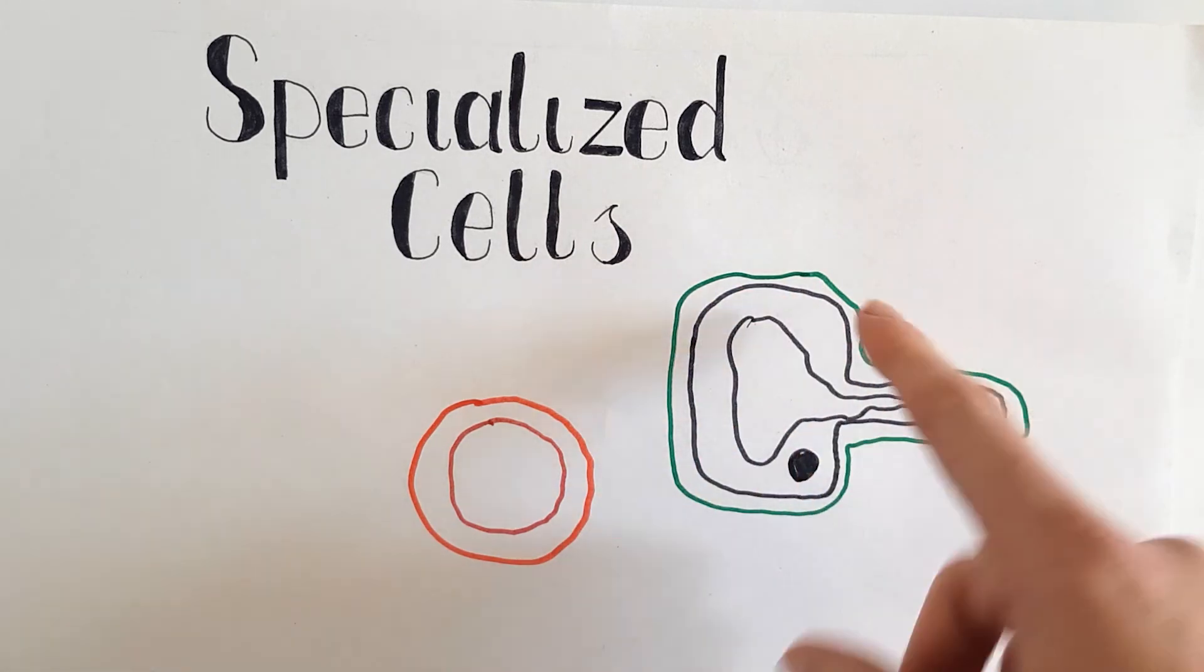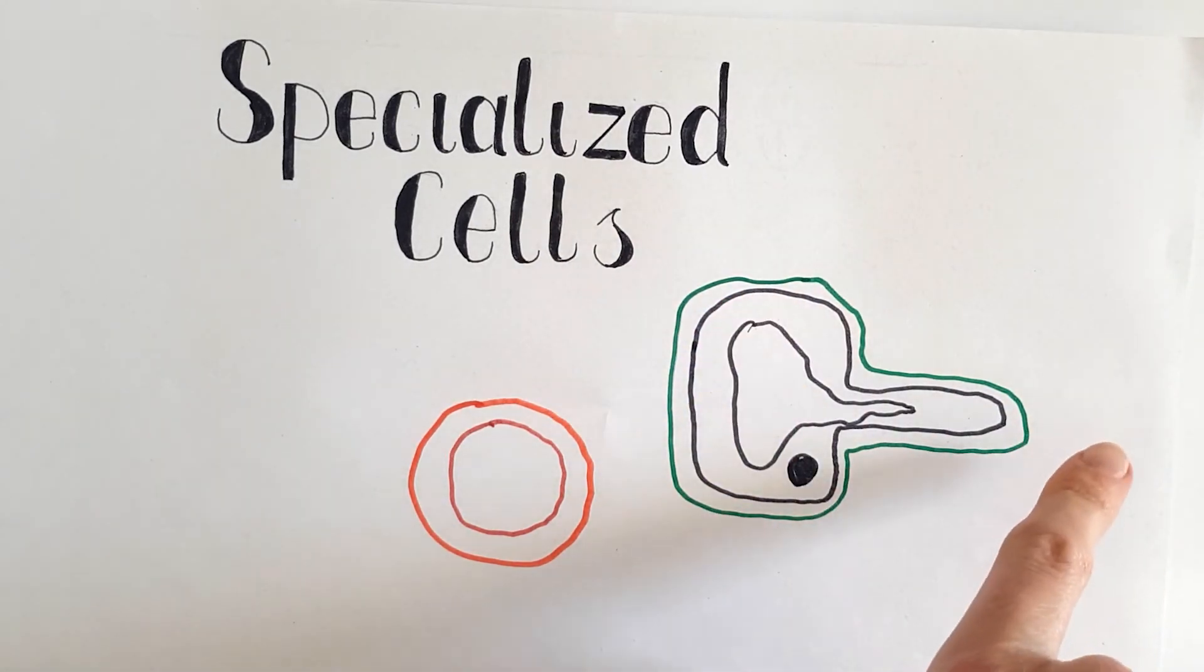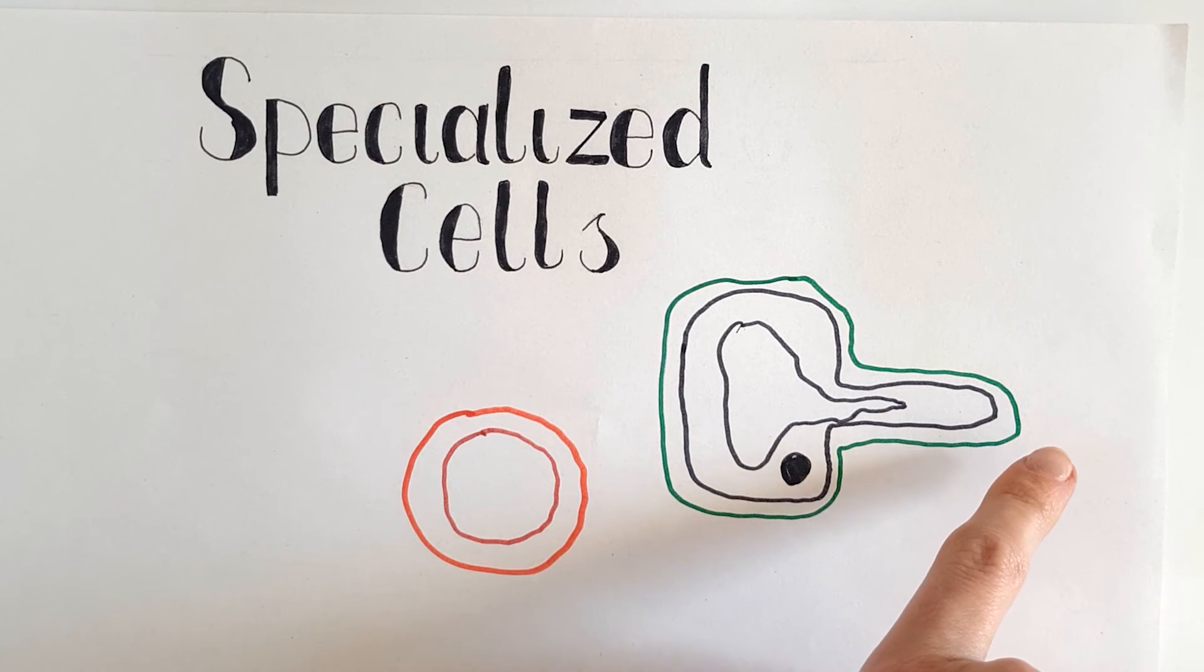It has a really big vacuole, but it doesn't have any chloroplasts. Because unlike the rest of a plant, this is in the soil, so it doesn't get exposed to any light. So it doesn't need to be able to photosynthesize, which is why it doesn't have any chloroplasts.